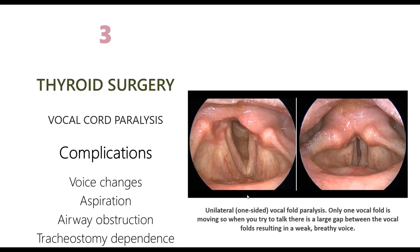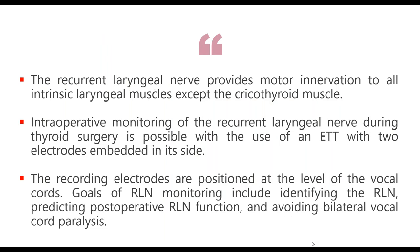Thyroid surgeries can unfortunately result in vocal cord paralysis. Common complications include voice change, aspiration leading to pneumonia, airway obstruction, and tracheostomy dependence. In the image shown, unilateral vocal fold paralysis leaves only one vocal fold moving, resulting in a large gap between the vocal folds and a weak, breathy voice. The recurrent laryngeal nerve provides motor innervation to all intrinsic laryngeal muscles except the cricothyroid. Intraoperative monitoring of the RLN during thyroid surgery is possible using an endotracheal tube with two electrodes embedded on its sides.